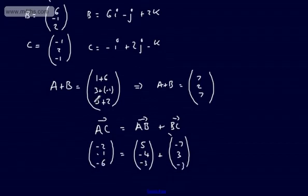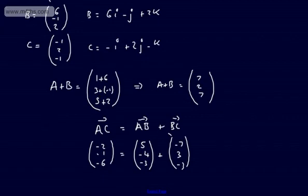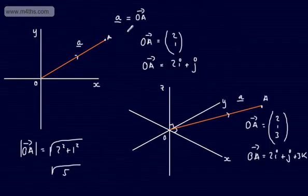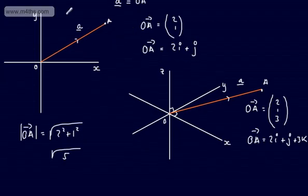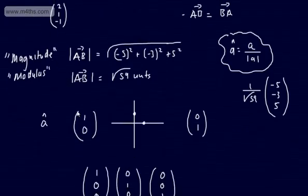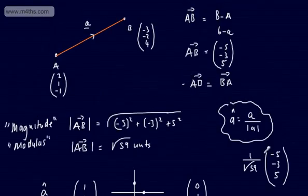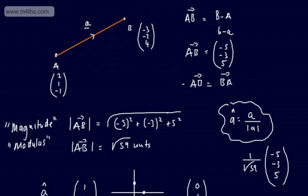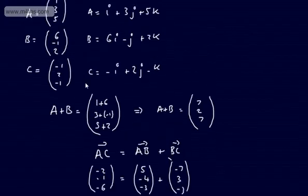So that's some basic work with vectors. To clarify what we've looked at: position vectors relative to the origin in 2 and 3D; the modulus or magnitude — the length of a directed line segment; unit vectors in each direction; finding the unit vector of any vector; the direction vector AB, which is simply B minus A; scalar multiples; and resultant vectors. Hopefully that gives you enough information to start looking at some basic work with vectors.